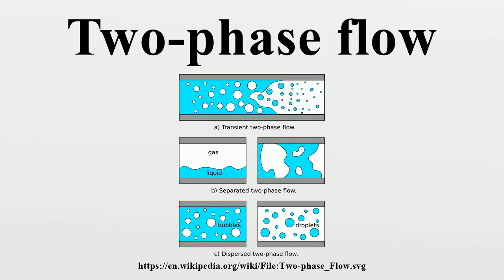Even more critically, nuclear reactors use water to remove heat from the reactor core using two-phase flow. A great deal of study has been performed on the nature of two-phase flow in such cases, so that engineers can design against possible failures in pipework, loss of pressure, and so on.